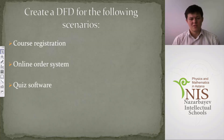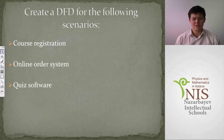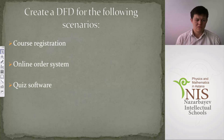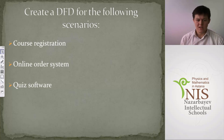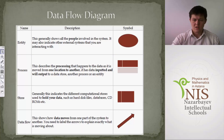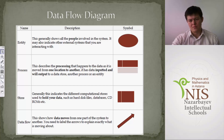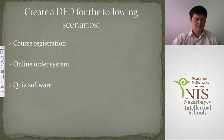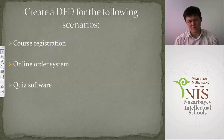Now a little task: please create a DFD for one of the following scenarios — course registration, online order system, or quiz software. Use the four different elements and try to draw DFD level 0 for the scenario you like best. I'll give you 5 minutes.